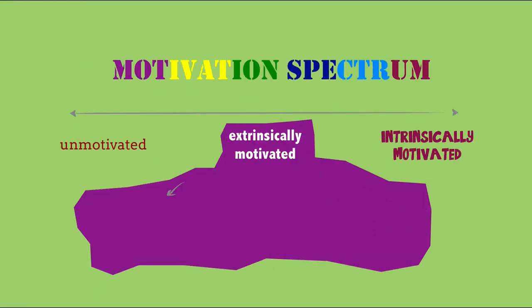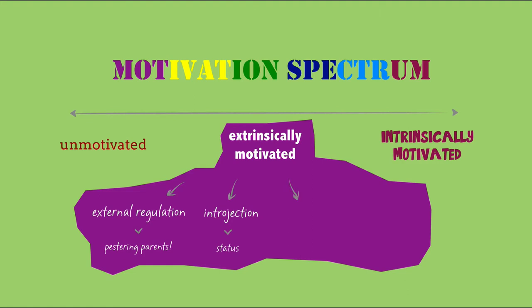The first shade of extrinsic motivation is external regulation — you don't want to do something, but you do it for the sake of someone else, like pestering parents. The second shade is introjection — you do something because it enhances your status, like a desire to top your school. The third shade is identification — you don't enjoy doing something, but you do it because you see the value in it, like taking mathematics in senior school because it will get you into a good college. The last shade is integration — you don't enjoy doing something, but you do it because it aligns with some goal you have set. For example, you don't like exercising, but because you want to lose weight, you exercise.